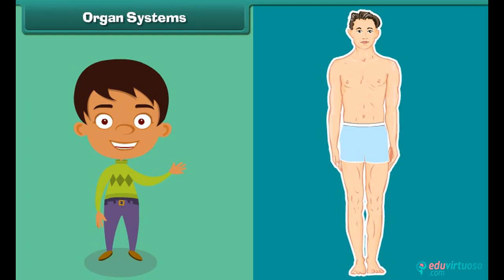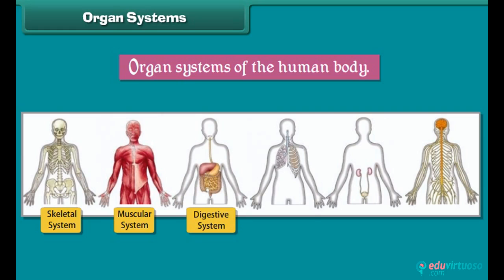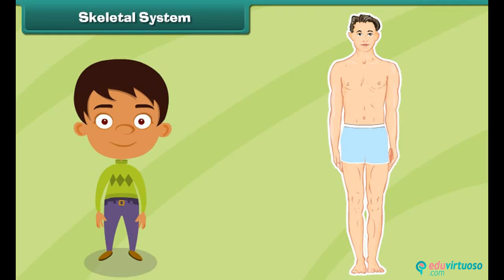The internal organs of the human body are grouped together to form different organ systems. Each organ system performs a special function. Some important organ systems of the human body are the skeletal system, muscular system, digestive system, respiratory system, excretory system, and nervous system. Let us now learn how each organ system works.